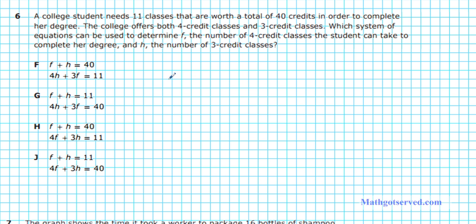So this is a straightforward question. F is the number of 4-credit classes and H is the number of 3-credit classes. So we're going to be setting up two equations here. The first equation will be the number of classes. So let's write that down.